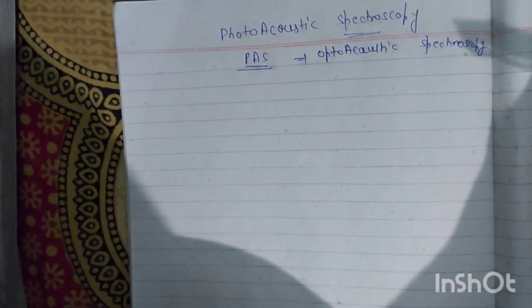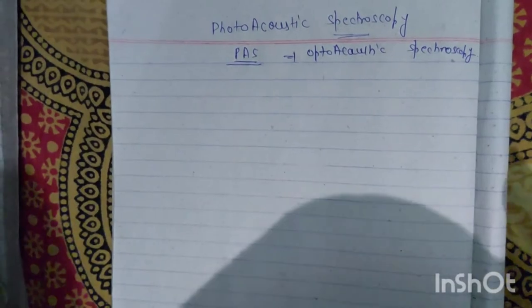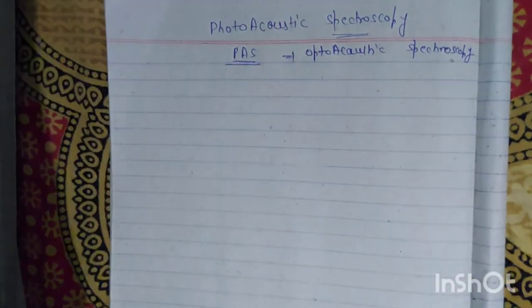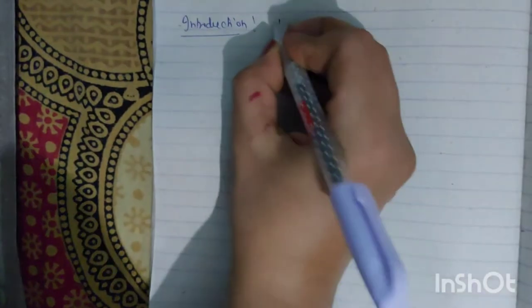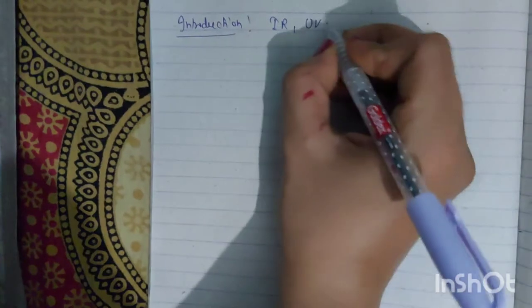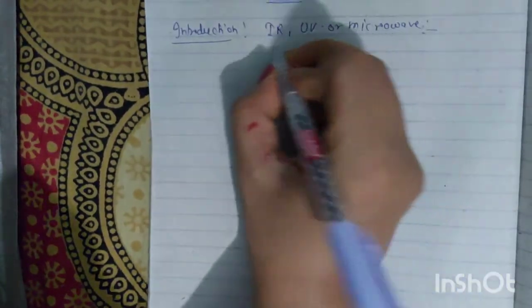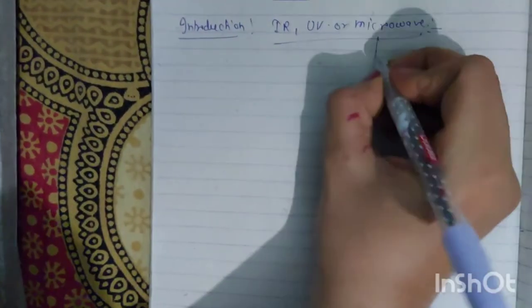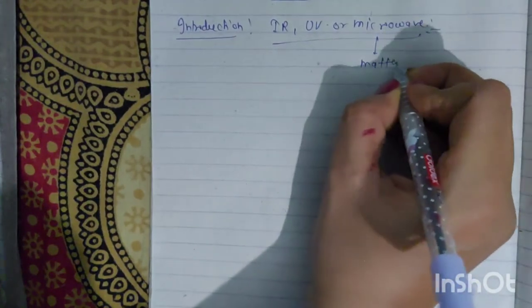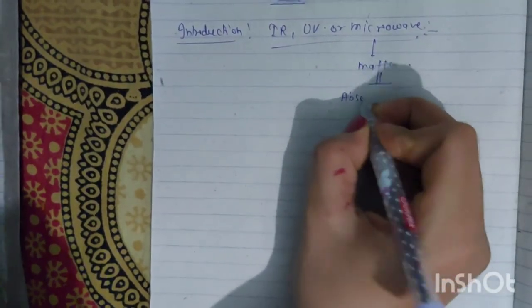Spectroscopy is two types: one absorption and the other emission. Now we are going to talk about PAS. First let's talk about the introduction of spectroscopy. In PAS we have to use radiation. We can use IR or UV, and microwave can also be used.